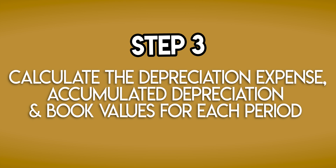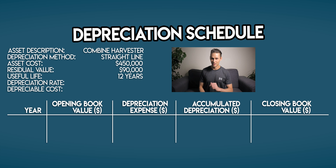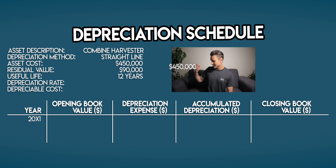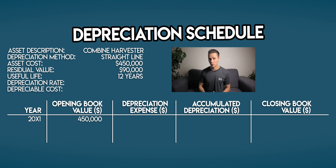Step three: calculate the depreciation expense, accumulated depreciation, and book values for each period. This is where things get real — we need to fill in all of the blanks. Let's begin with your opening book value. This one's easy: it's your asset cost, $450,000.